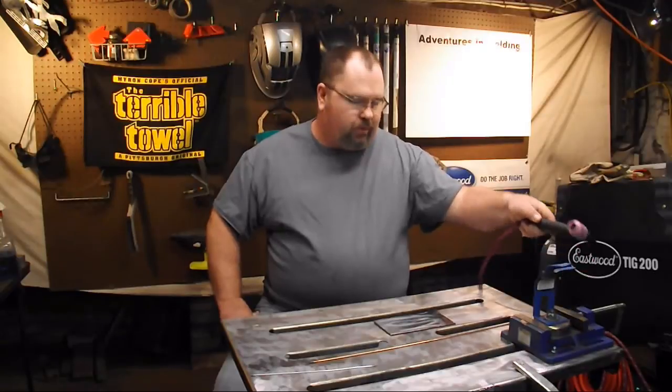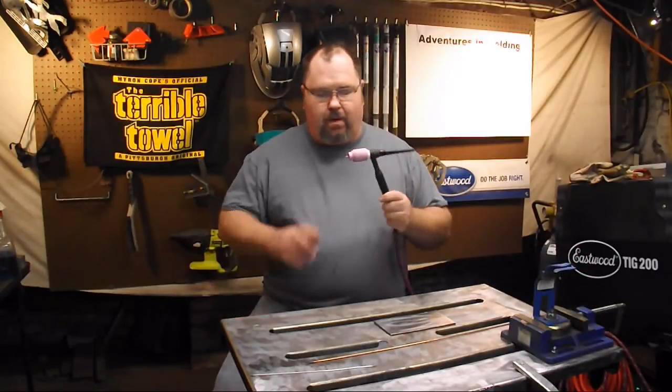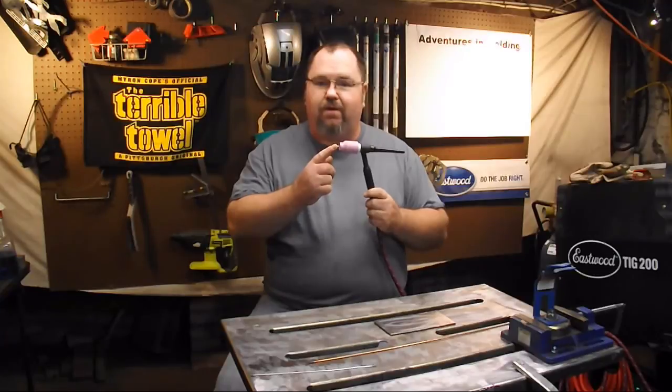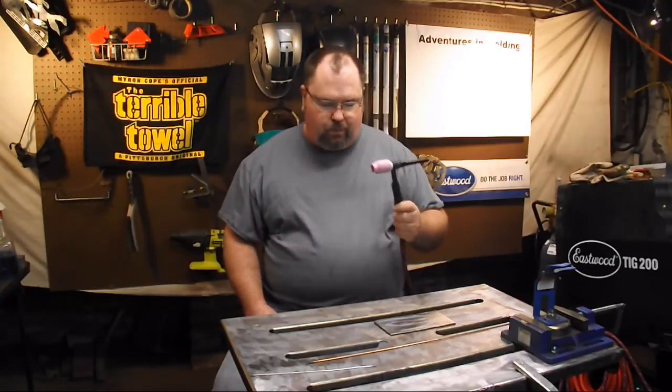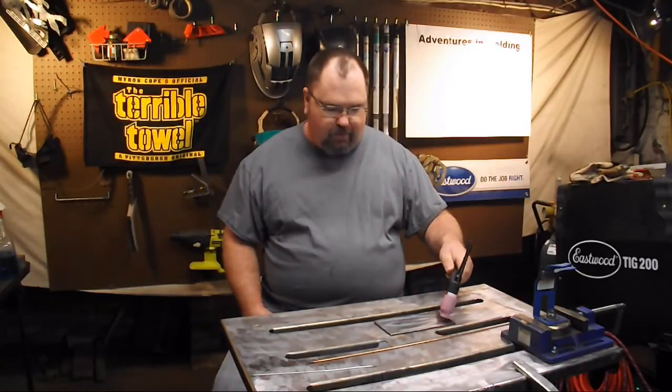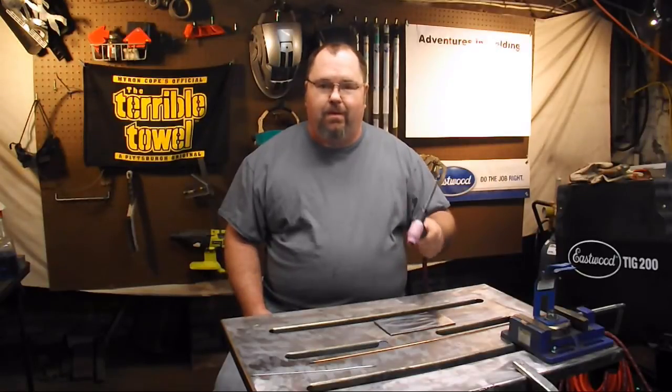So today we're going to talk about TIG welding. Our electrode is, of course, the tungsten in the TIG welding torch and the material we're welding, which in this case is 1018 mild steel. So let me bring you in closer, and we'll talk a little bit more about arc length.